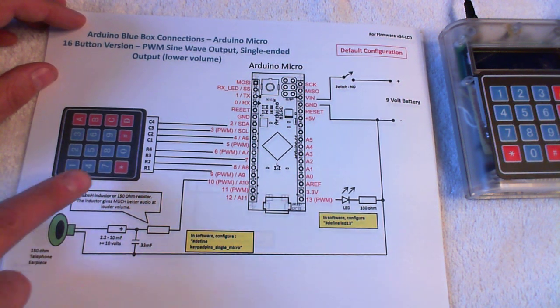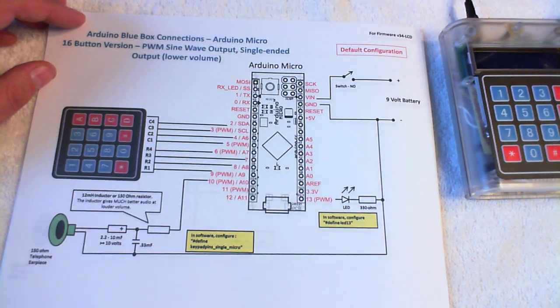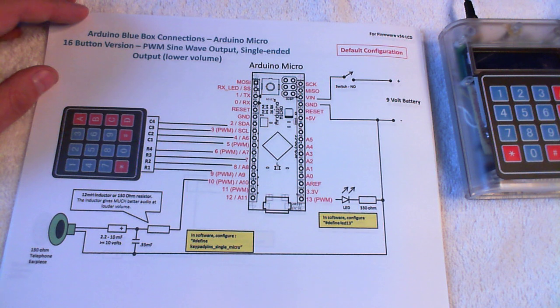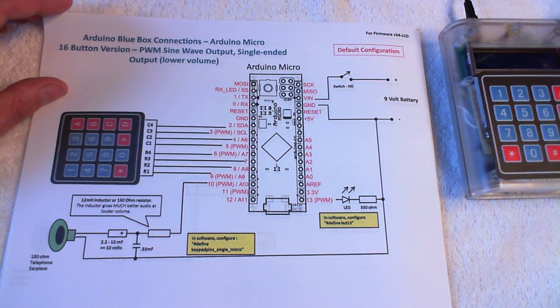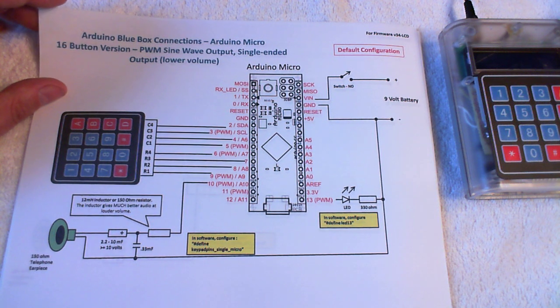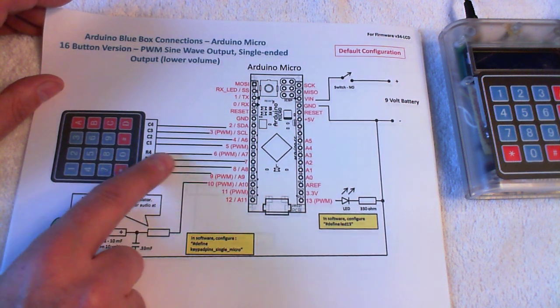You can see the keypad here which has eight connections. This particular configuration, which is the default configuration, is for the Arduino Micro, which is the larger official Arduino board, not the one I used in the hardware prototype. But it's commonly available at Radio Shack and some people may decide to use that. So the connections from the keypad are shown.